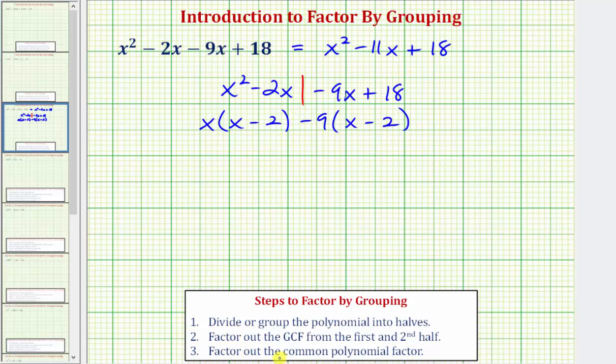So our last step is to factor out the common polynomial factor, or in this case, the common binomial factor of (x - 2). Notice how both of these products contain a factor of (x - 2). So if we factor out (x - 2), notice how we'd be left with (x - 9), which is the second factor. So this is the factored form of the given quadratic expression.